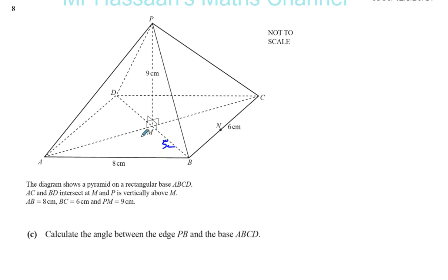We also know the angle P and M. If we need it, I can go back and get it. Now, it says calculate the angle between the edge PB and the base ABCD. So basically, they want you to find this angle here. The angle between a line and a plane is the angle between the line and the shadow of that line as if it would fall on that plane.